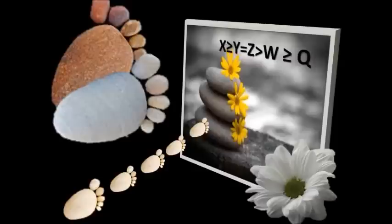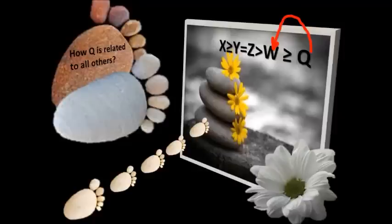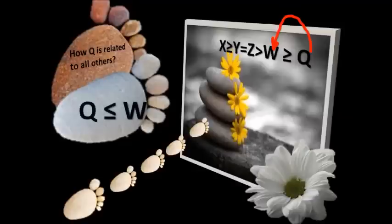Now let's look at how q is related to all others — going in the reverse direction. First, q and w: w is greater than or equal to q. When writing in terms of q, when you read the expression from the reverse direction, you find the priority of the symbol and inverse it when you write. So q is less than or equal to w.